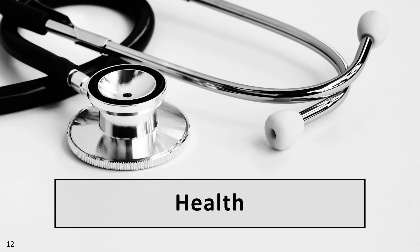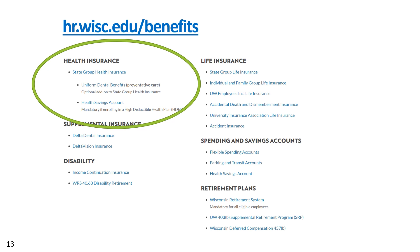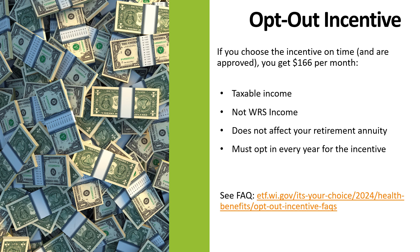Now let's talk about your health insurance. We'll look at state group health insurance, dental benefits, and health savings accounts. You can waive health insurance — for example, if you have other coverage not covered under the state of Wisconsin group health insurance program. If you choose the opt-out incentive on time and are approved, you get $166 per month on your paycheck. This is taxable income and does not affect your retirement annuity. You must opt in every year for the incentive during the Annual Benefits Enrollment, or ABE.